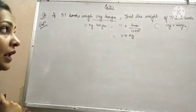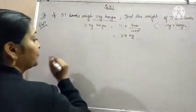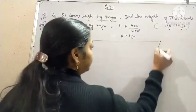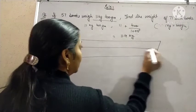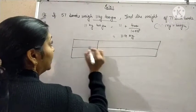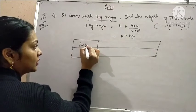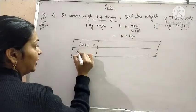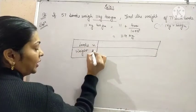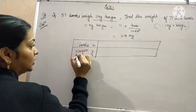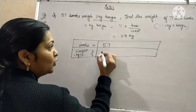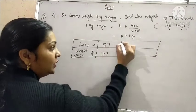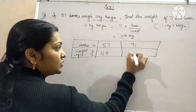Now formulate the table. Here books, take it as X. Here weight, take it as Y. See when there were 57 books weight was 11.4 kg. Now the books are 71. Take weight as X.